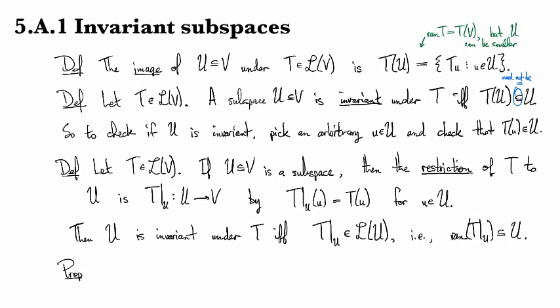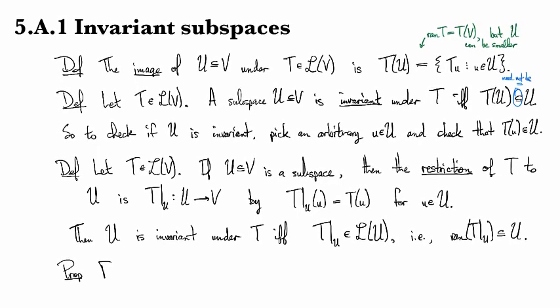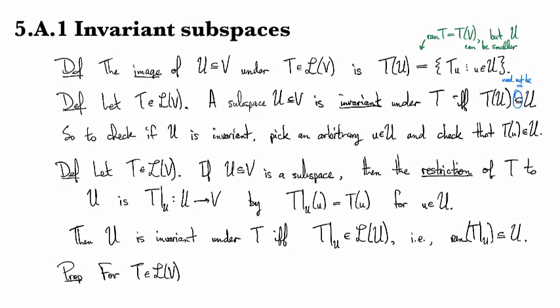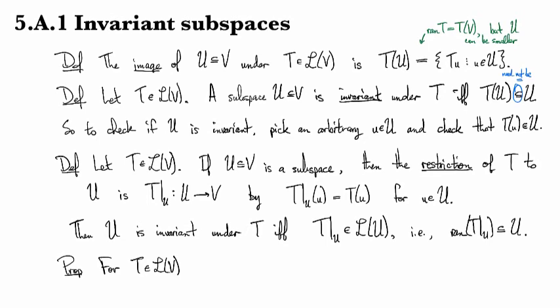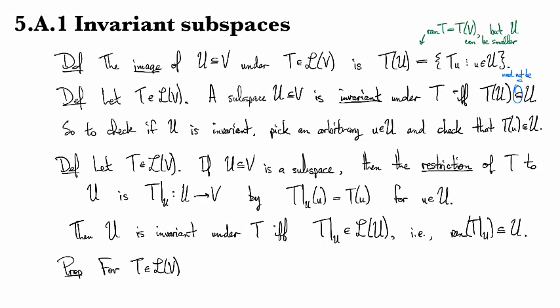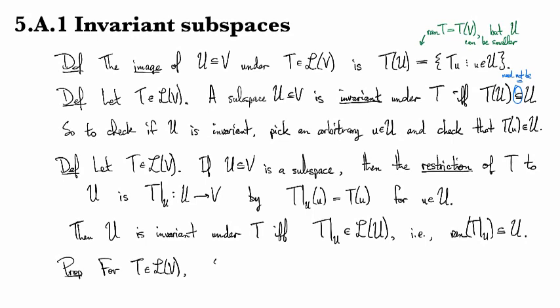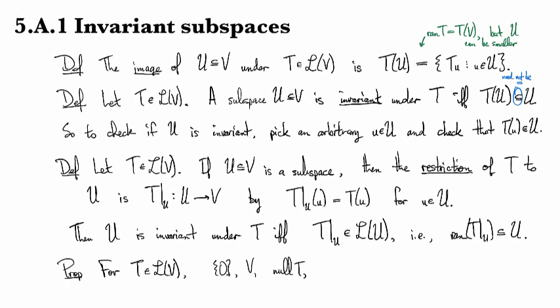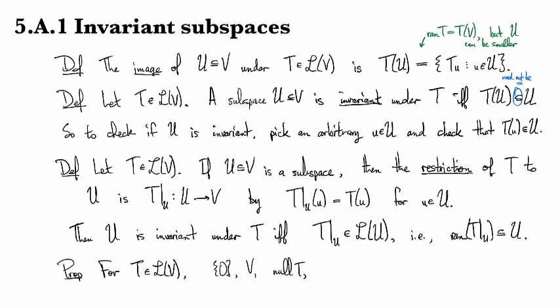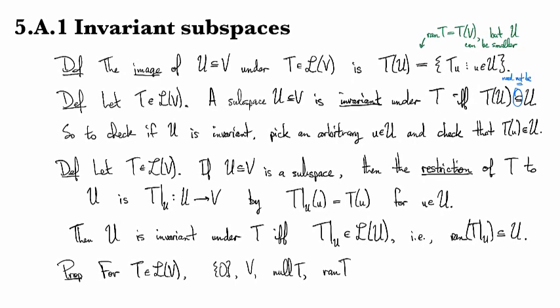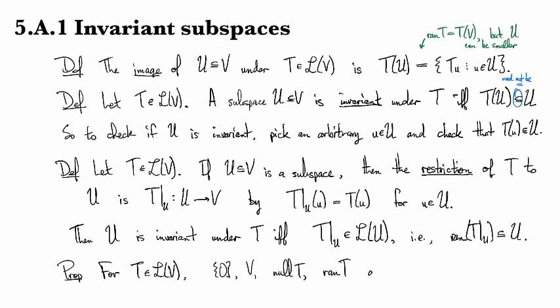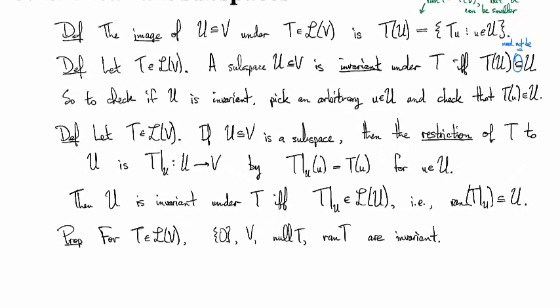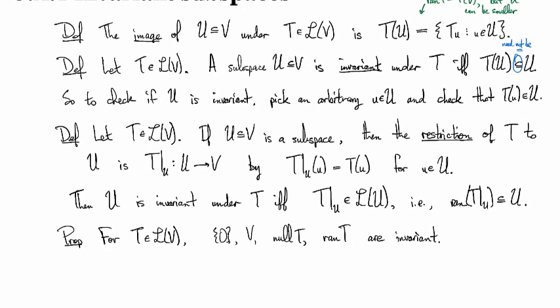We have a mini proposition, sort of an example. And that just tells us about some of the basic invariant subspaces that we already know. The trivial space {0}, the null space, and the range of T are all invariant.